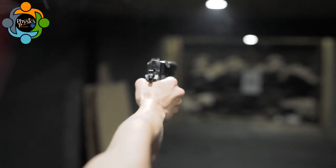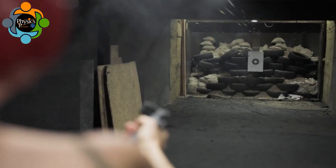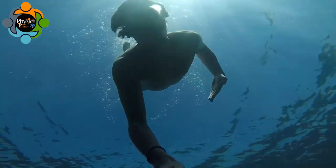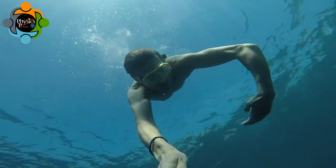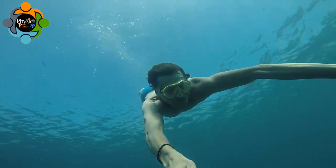Another example of Newton's third law is the recoil of a gun. When you fire a gun, the bullet travels out of the barrel and the gun recoils backward. This happens because the force of the bullet moving forward is met with an equal and opposite force pushing the gun backward.